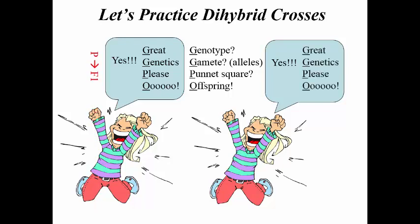Let's go ahead and go through the P to the F1, and then we're going to go F1 to F2. I just want to note a little error on this slide — the second time should be F1 to F2, not P to F2. Let's go ahead and do this cross for a dihybrid.